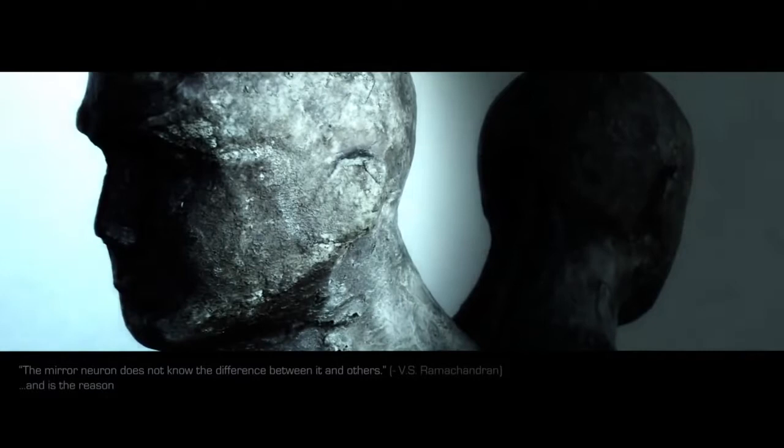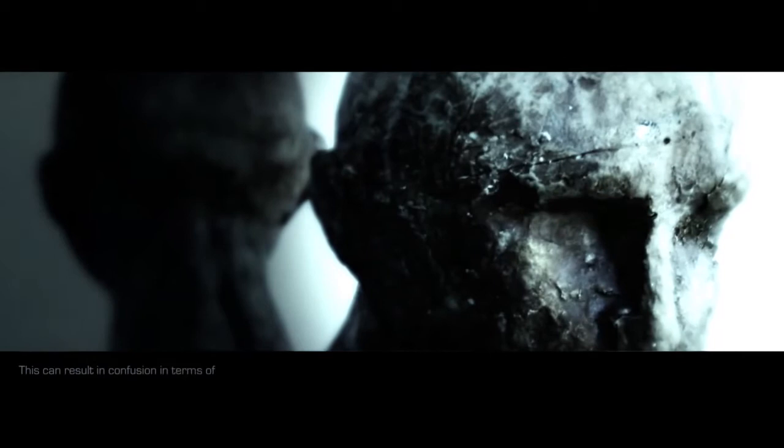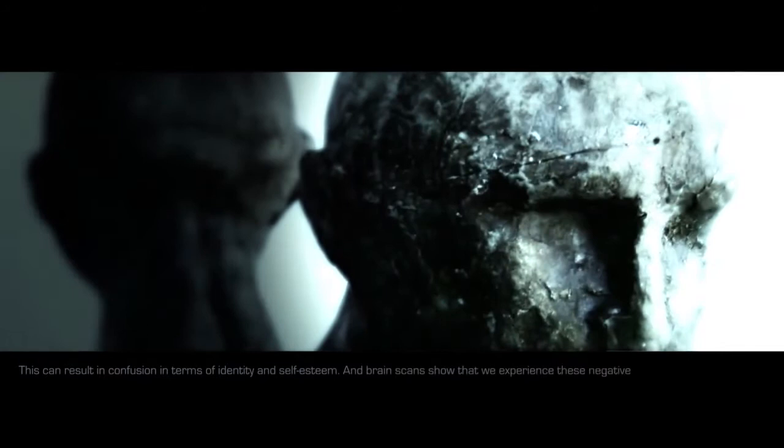The mirror neuron does not know the difference between it and others, and is the reason why we are so dependent on social validation and why we want to fit in. We are in a constant duality between how we see ourselves and how others see us. This can result in confusion in terms of identity and self-esteem. And brain scans show that we experience these negative emotions even before we are aware of them.